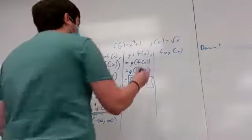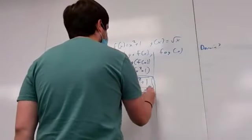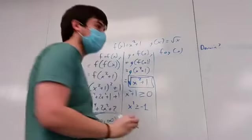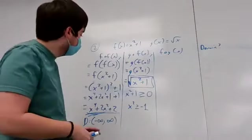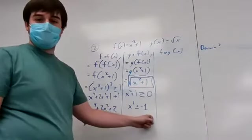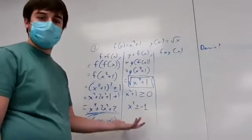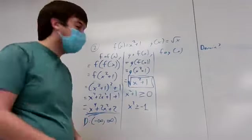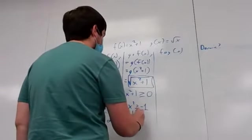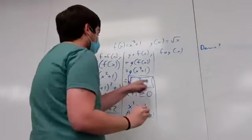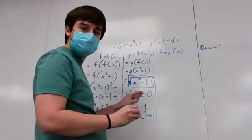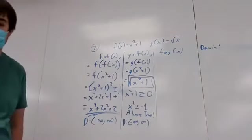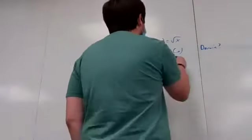For the domain of g(f(x)) = √(x²+1), I need x²+1 ≥ 0, which means x² ≥ -1. Since x² is always non-negative, this is always true — any x works. So the domain is (-∞, +∞).